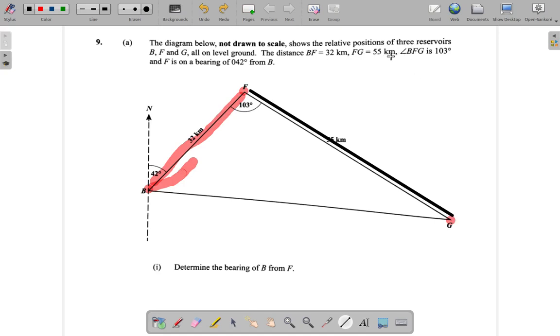And the angle BFG, the angle BFG right here is 103 degrees. And F, that's this, is on a bearing of 042 degrees from B. From B.